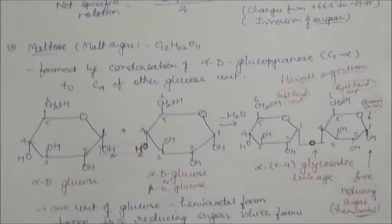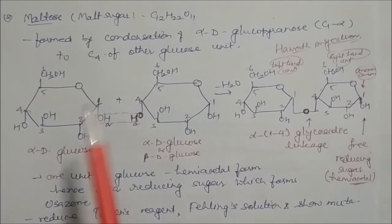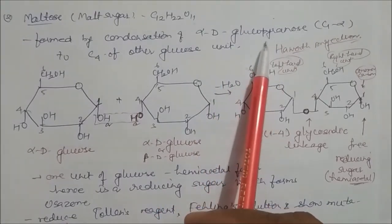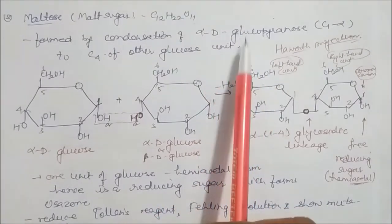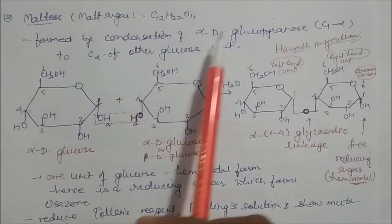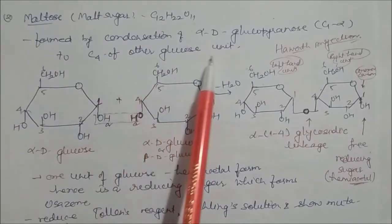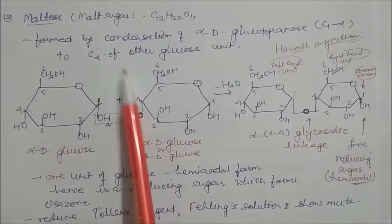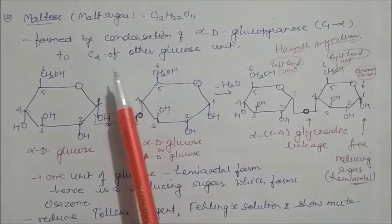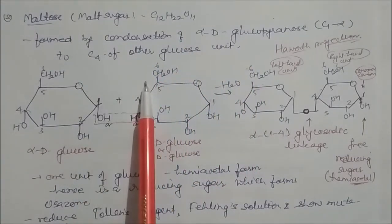Malt sugar (maltose) has the same formula C₁₂H₂₂O₁₁. It is formed by condensation of two alpha-D-glucopyranose units. In sucrose the linkage was C1–C2, but in maltose the linkage is C1–C4. This is the key difference between maltose and sucrose.